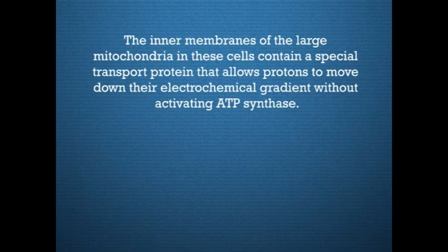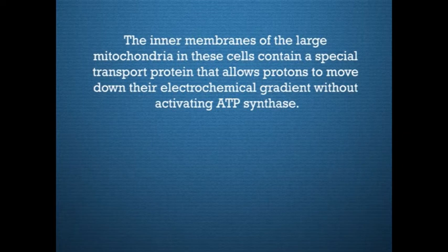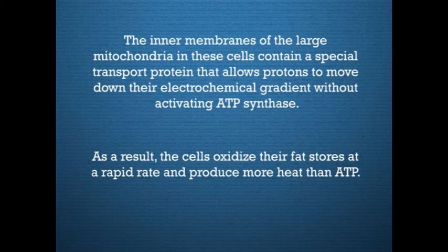The inner membranes of the large mitochondria in brown fat cells contain a special transport protein that allows protons to move down their electrochemical gradient without activating ATP synthase. As a result, the cells oxidize their fat stores at a rapid rate and produce more heat than ATP. Tissues containing brown fat thereby serve as heating pads that revive hibernating animals and protect sensitive areas of newborn human babies from the cold.